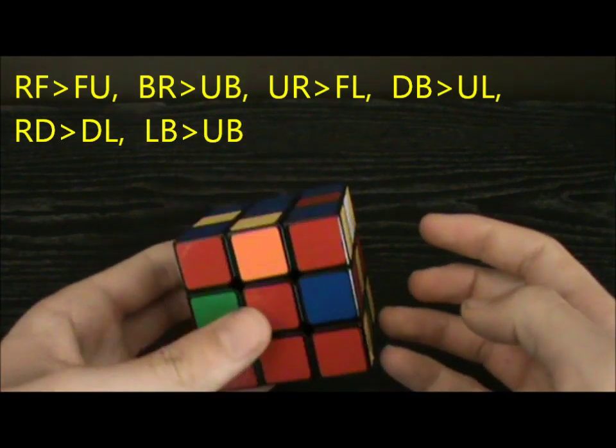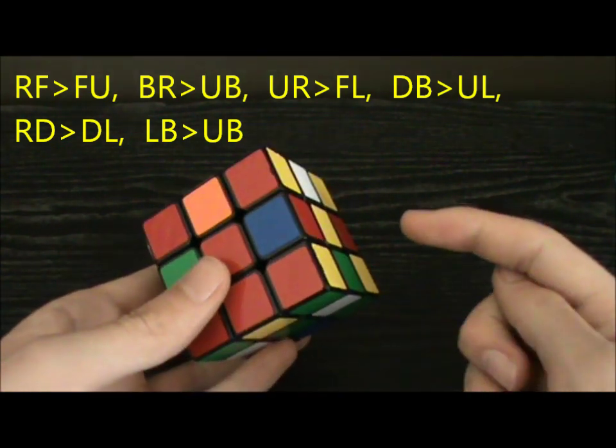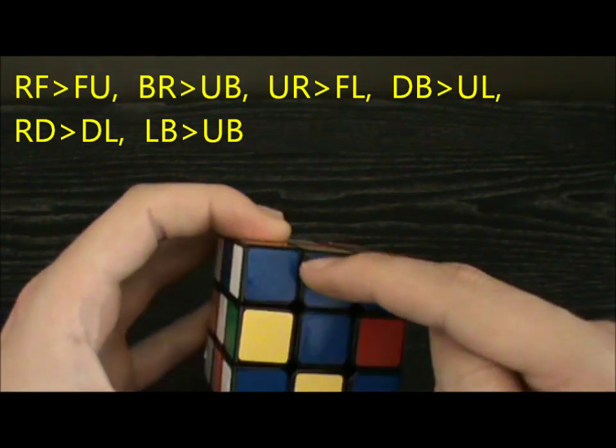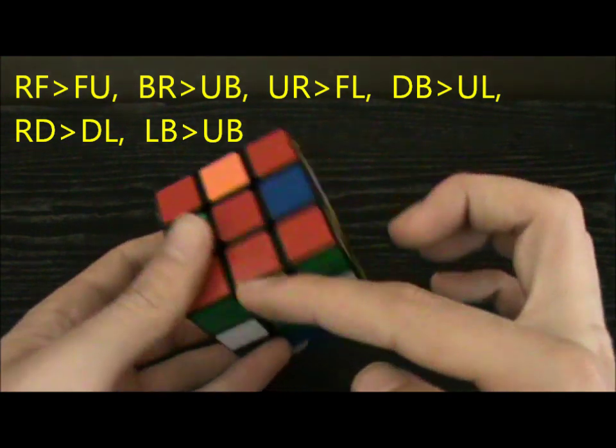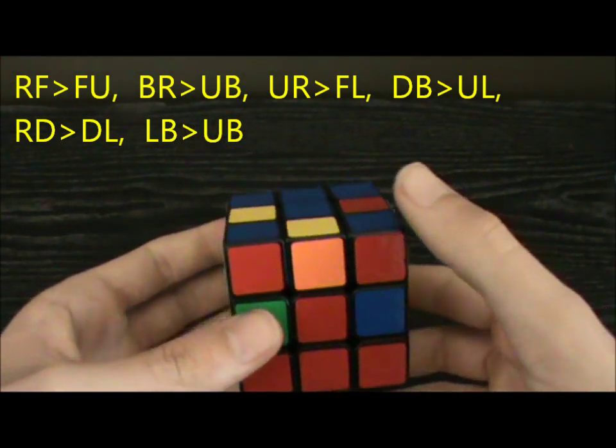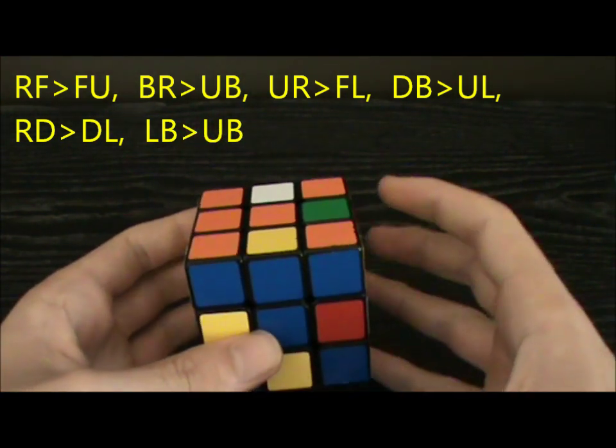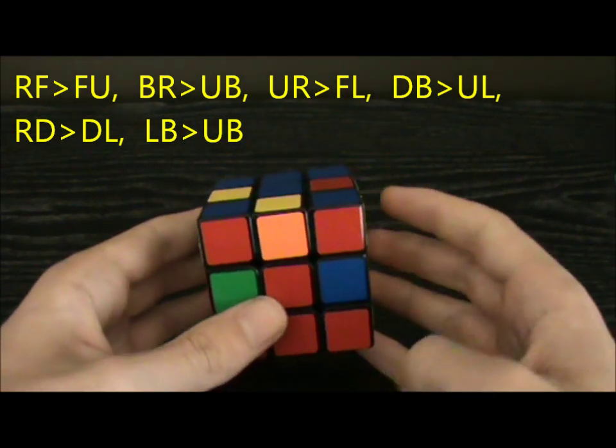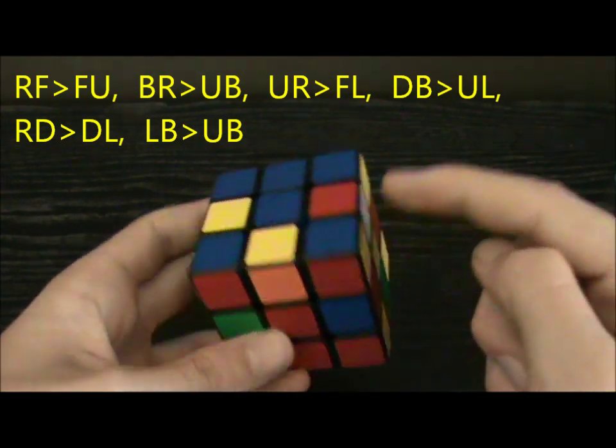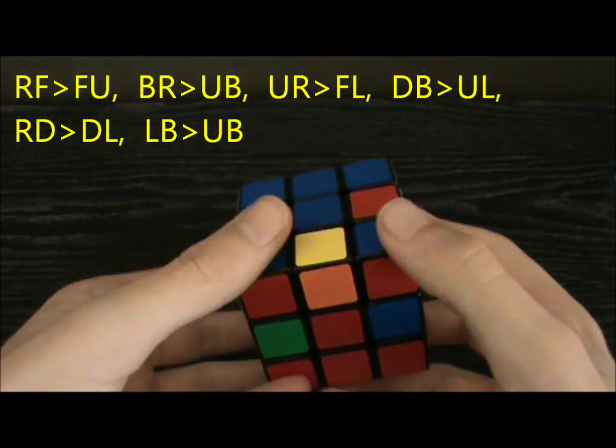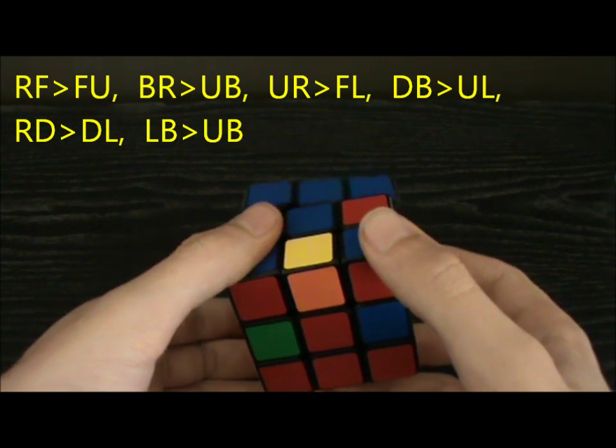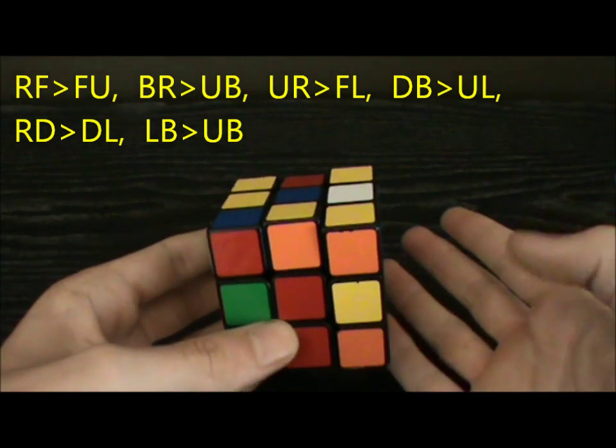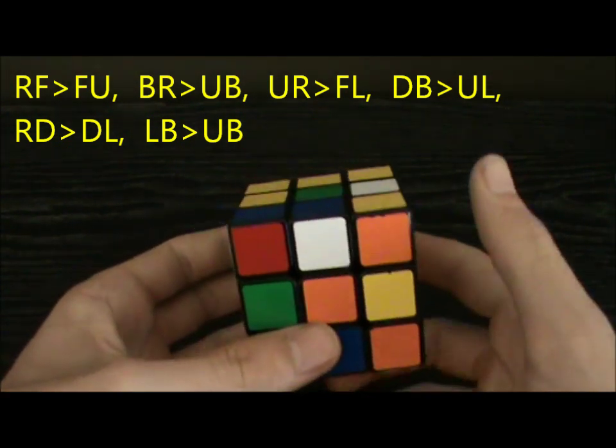Now for the execution. To jog your memory, we have to find a way to bring RF to UB without disrupting anything else in the M slice. You can rotate it for this, but I'm just going to keep things simple by holding it in the same orientation. So this can be put to UB by applying the moves B' R' B. That's the setup. Now you can do M2 and undo the setup.